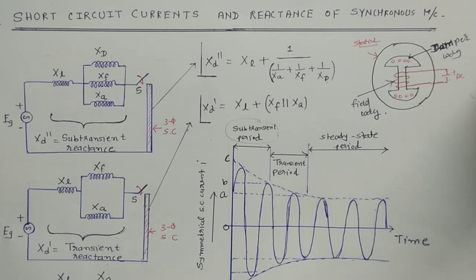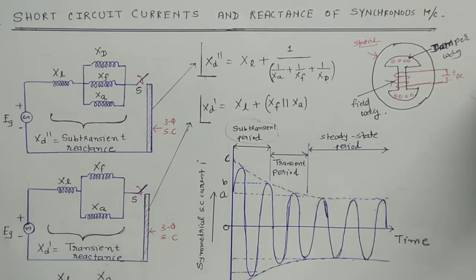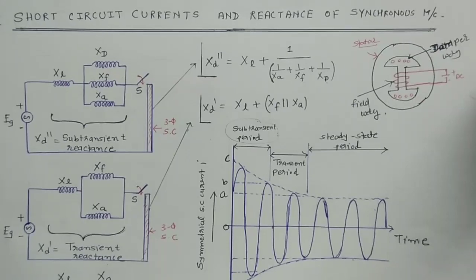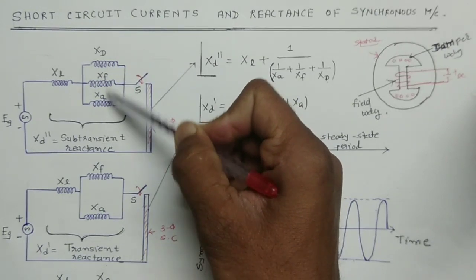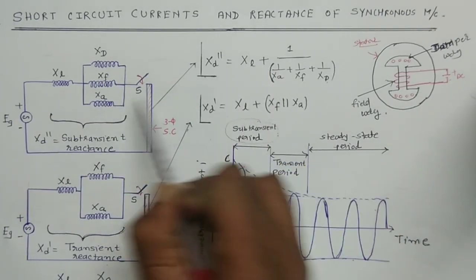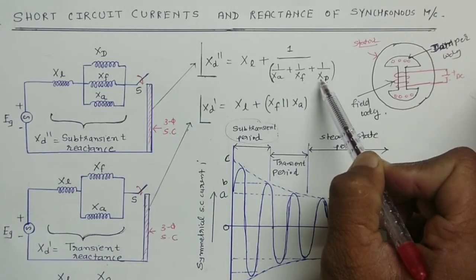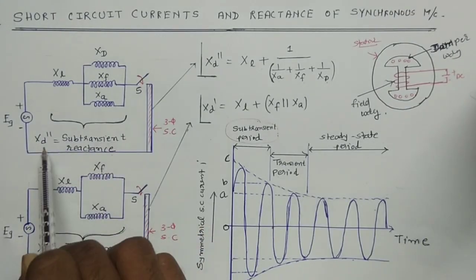At the time of a three-phase short circuit, initially there is mutual coupling between the rotor, stator, and damper winding, so that the total reactance of the synchronous machine becomes lower. Because armature winding reactance, field winding reactance, and damper winding reactance are connected in parallel. This total equivalent reactance is given by XD double dash equals XL plus the parallel combination: 1 over (1/XA + 1/XF + 1/XD). This reactance is known as sub-transient reactance XD double dash, and its value is very low.